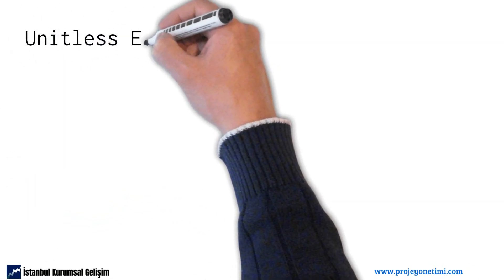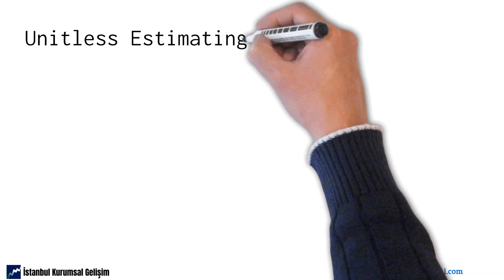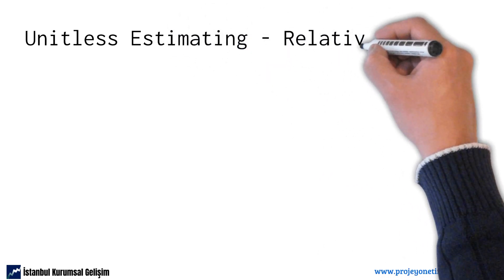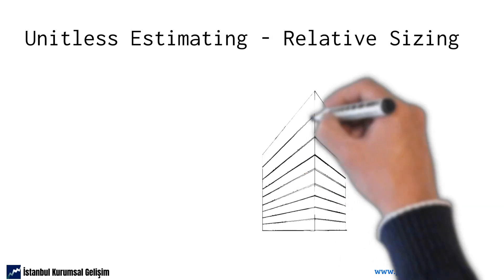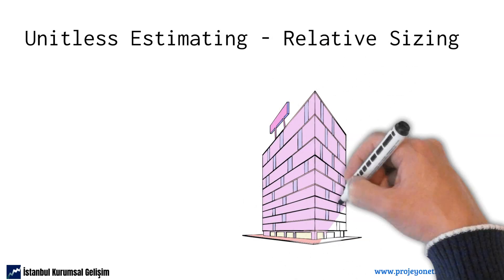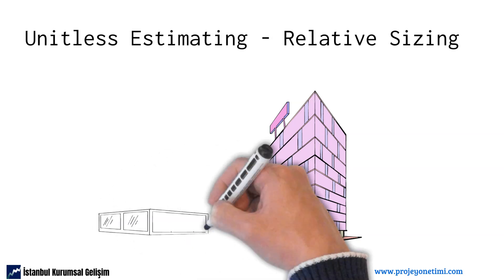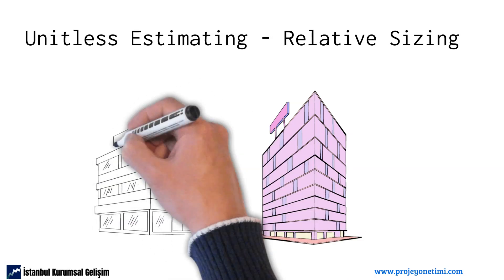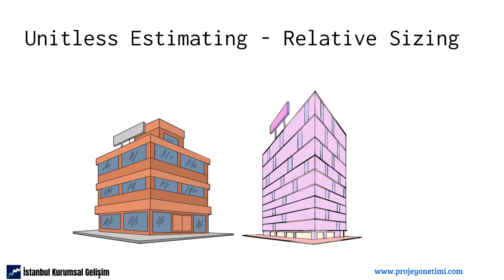Estimations are made on unitless values in the Scrum approach — in other words, the relative size approach is taken as a basis. Let's explain with a simple example. When you look at a large building, it is very difficult to tell how many floors it has. Rather, it is much easier to compare two buildings and tell which one is bigger. This is called relative sizing.